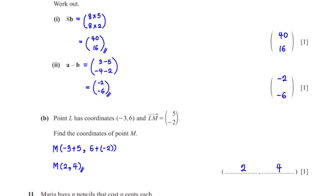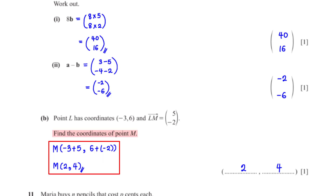Point L has coordinates (−3, 6) and vector LM is (5, −2). Find the coordinates of point M. For the x-coordinate we add 5 to −3, giving 2. For the y-coordinate we add −2 to 6, giving 4. So M is (2, 4).